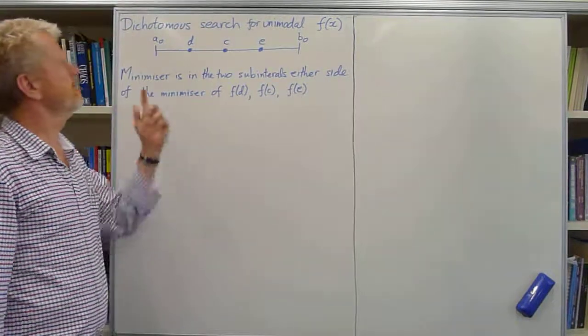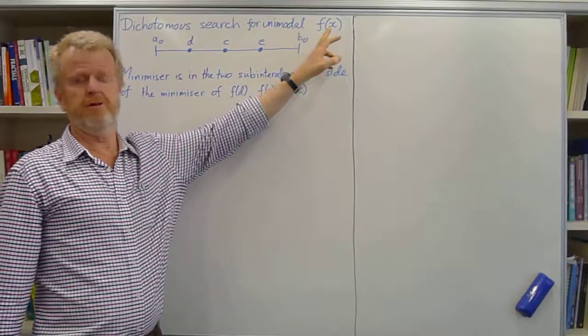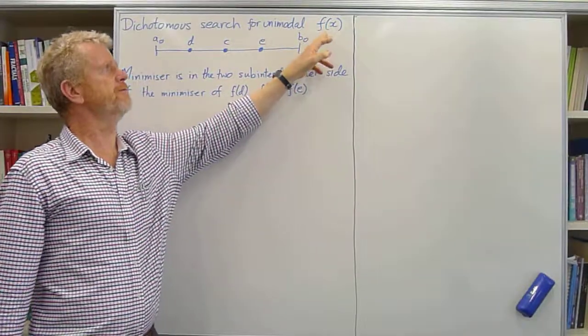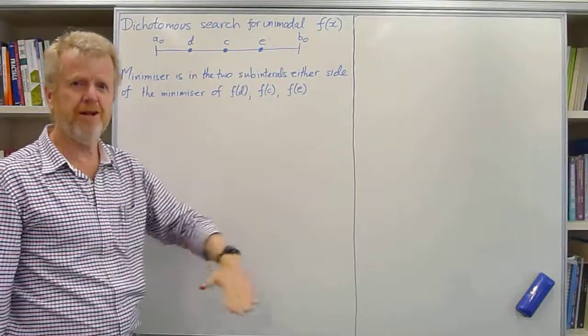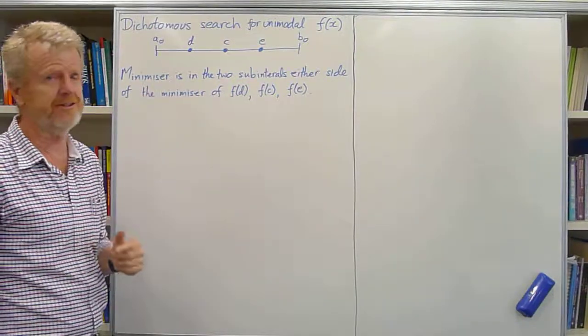Now let's look at the dichotomous search for a minimum of a function f that's unimodal. It means it only has one local minimum on the interval under consideration.